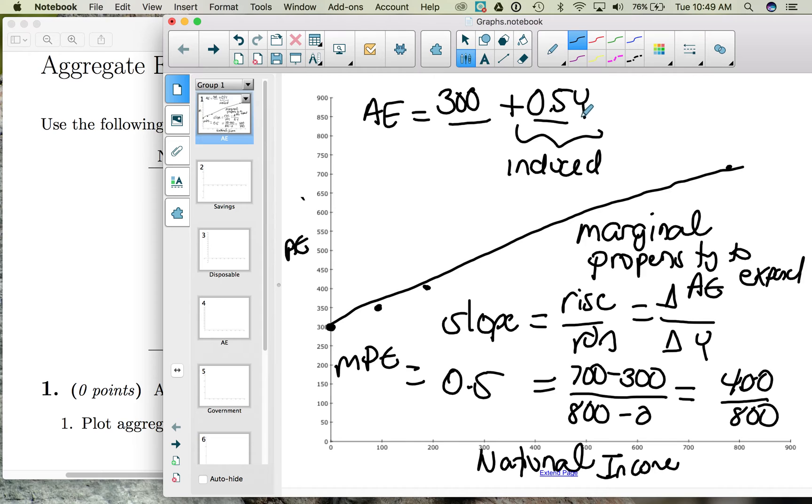Now this Y is a placeholder. If, for example, income is 300, then aggregate expenditures would be 300 plus 0.5 times that 300 income. And so total aggregate expenditures would be 300 plus 150 or 450. So notice when our income was 300, aggregate expenditures were 450.